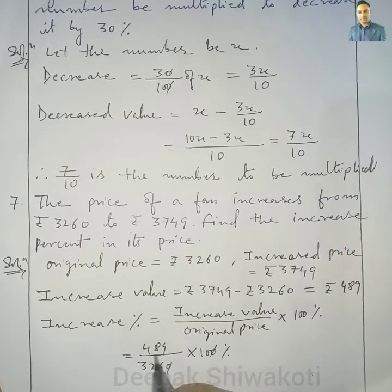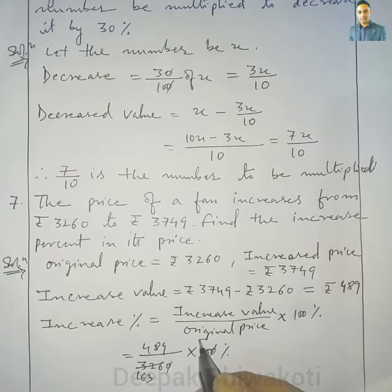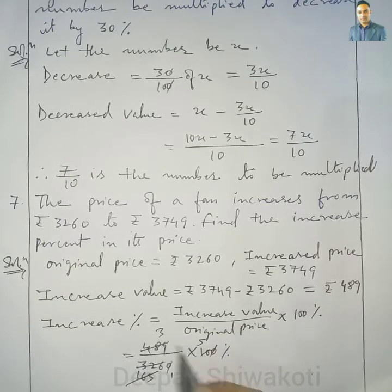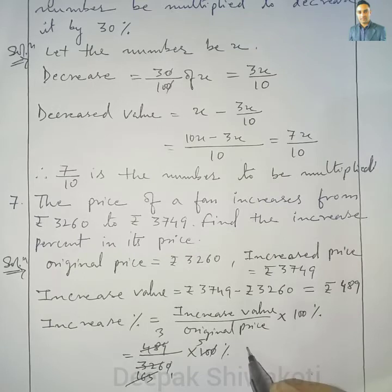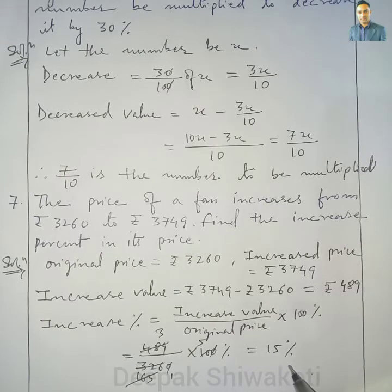When we calculate 489 by 3,260 into 100%, simplifying gives us 15%. So the increased percentage equals 15%.